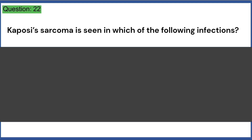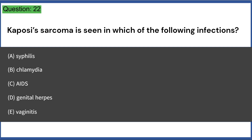Kaposi's sarcoma is seen in which of the following infections? A. Syphilis, B. Chlamydia, C. AIDS, D. Genital herpes, E. Vaginitis. Answer: C.